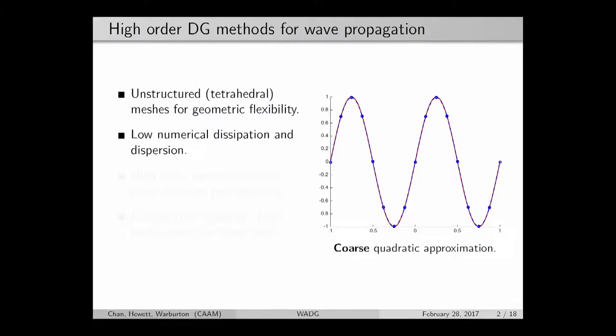This is useful for wave propagation because it reduces numerical dispersion features present in low order methods. Here I'm taking a sinusoidal wave propagated over a periodic domain for several periods. If you use a low order linear method, you see unnatural dissipation near the peaks. If you use a coarser mesh but increase the order by one to a quadratic method, this numerical dissipation almost disappears entirely.